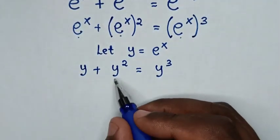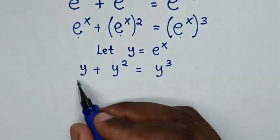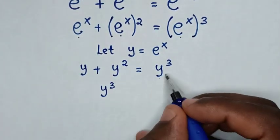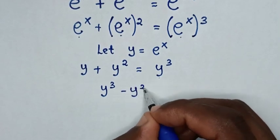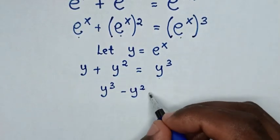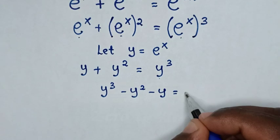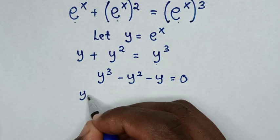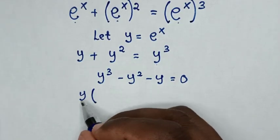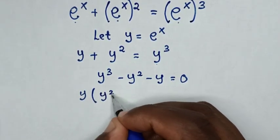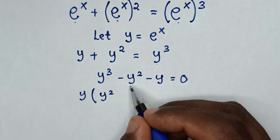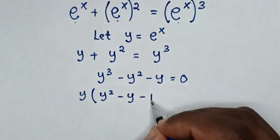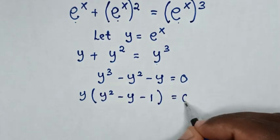In the next step, we take y squared and y to the right side, so we have y cubed minus y squared minus y equals 0. From this, y is common, so we take y out of the bracket: y times (y squared minus y minus 1) equals 0.